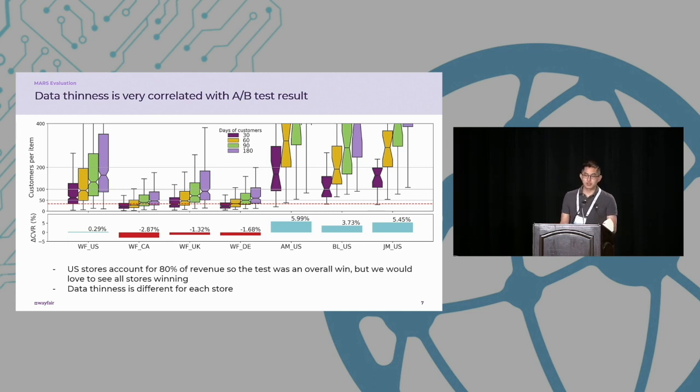So our first test for all stores used the same 30-day lookback, which is that leftmost purple box plot. And you can see that the A-B test result below is heavily correlated to the data thinness. The worst performing stores in the A-B test all have the thinnest data. So to improve the performance of these stores, we basically tried to align their data density with the Wayfair US store, and we did this fairly arbitrarily using the 25th percentile of the Wayfair US as a yardstick.